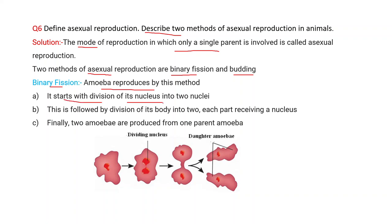In binary fission, it starts with the division of the nucleus into two nuclei. This is followed by division of the body into two, each part receiving a nucleus. Finally, two amoeba are produced from one parent amoeba. You can draw this diagram: single amoeba, nucleus dividing, body dividing, then two daughter amoeba produced.